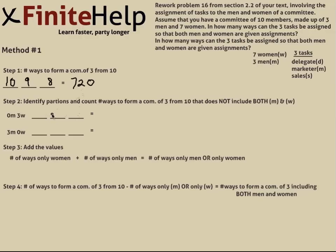Step 2: we'll identify the partitions and count the number of ways to form a committee of 3 from 10 that does not include both men and women. You can either have 0 men and 3 women or 3 men and 0 women. For 0 men and 3 women, there's 7 women to choose from, so 7, then 6, then 5. You multiply those together and get 210. For only men, 3, 2, 1, that gives you 6.